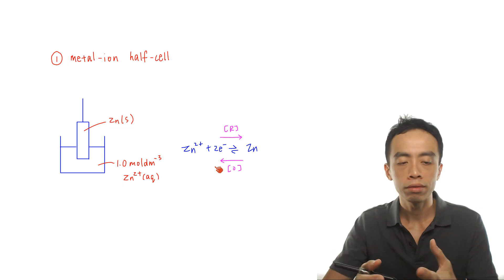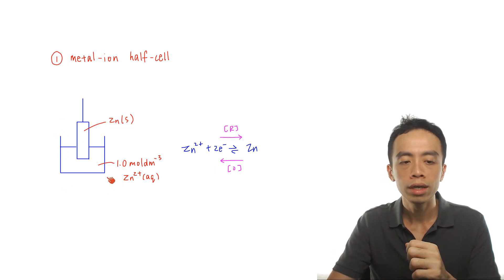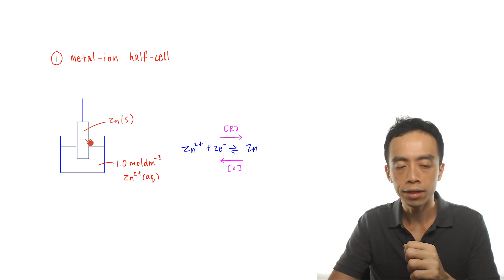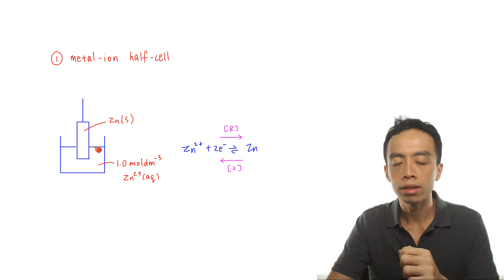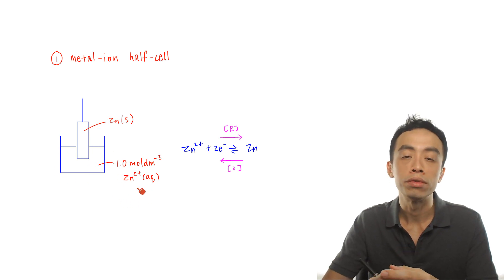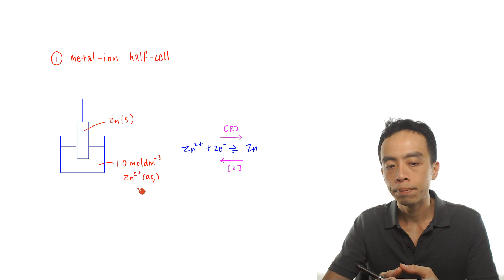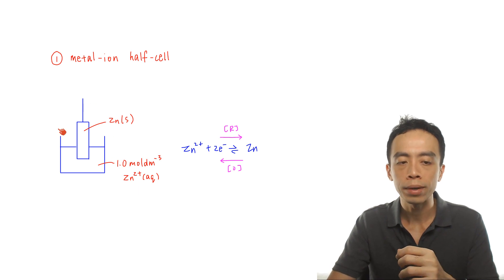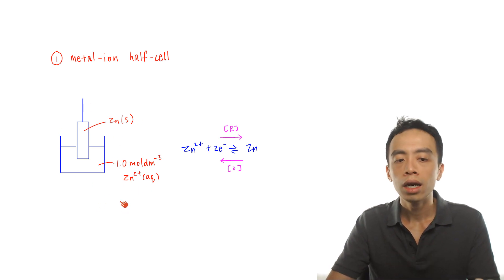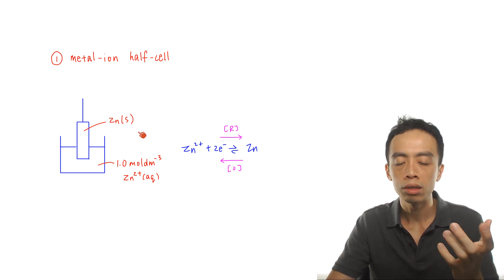In terms of drawing this half cell, we have a container like a beaker with a solution, and we stick a zinc metal electrode in. The zinc metal functions as the electrode, and inside the solution we need zinc 2+ aqueous. Under standard conditions, the concentration of ions in solution must be 1 mol dm⁻³. With this particular setup, we have the metal-ion half cell established between Zn²⁺ and Zn metal.